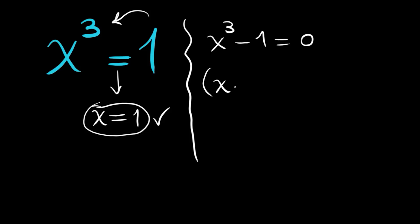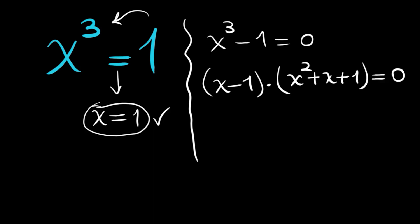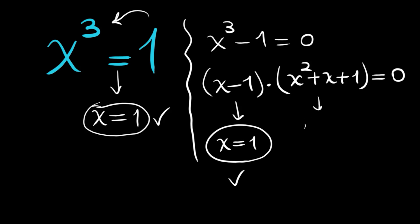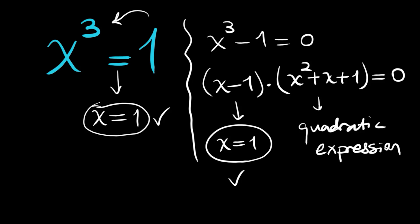x minus one times x squared plus x plus one is equal to zero. So from here, the real root one can be seen, and the other part is a quadratic expression. To solve it, we will use the quadratic formula.